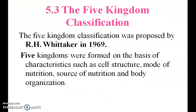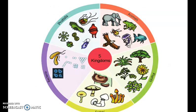Five kingdom classification. The five kingdom classification was proposed by Whittaker in 1969. The five kingdoms are formed on the basis of characteristics such as cell structure, mode of nutrition, source of nutrition, and body organization. The five kingdoms are: Monera, Protista, Fungi, Plantae, and Animalia.